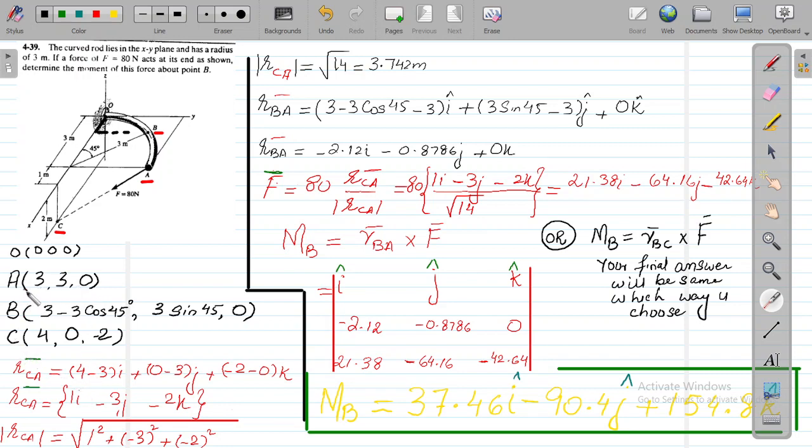It will be coordinates of C minus the coordinates of A. So it will be 4 minus 3i, 0 minus 3j, and minus 2 minus 0k. So it will be 1i minus 3j minus 2k, and the mod of RCA will be the square root of 1² plus (-3)² plus (-2)², which equals square root of 14 equals 3.742 meters.